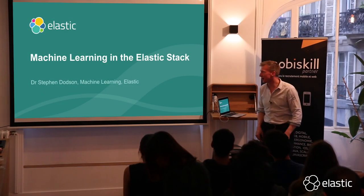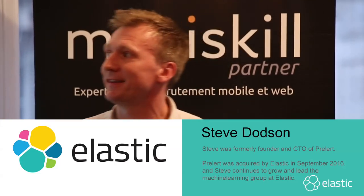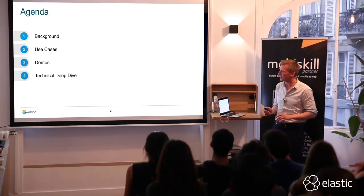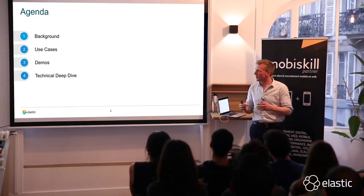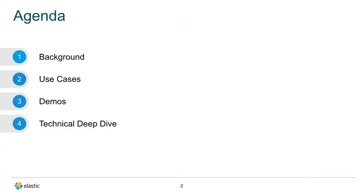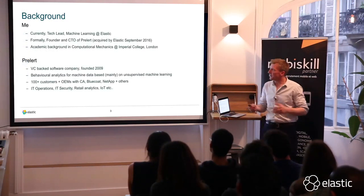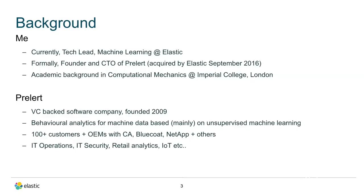Hi, I'm Steve and I'm sorry I'm speaking in English. I did actually go to a course on Charles de Leon so I should, but that was in 93 so I'm a bit rusty. What I'd like to talk about tonight is machine learning in the Elastic Stack. I'm going to give you a little bit of background about where the technology came from, then go into how that technology can be used with Elasticsearch data, then give you some demos of the product and finally go into a bit of a deep dive. I'm currently leading the machine learning group at Elastic. I was formerly founder and CTO of a company called Pre-Lert that I started back in 2010, and Elastic acquired that company and the team in September 2016, which is really exciting and I think it's a really good fit for both technologies.